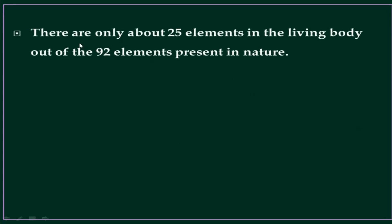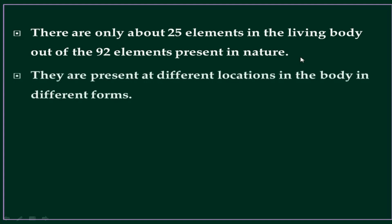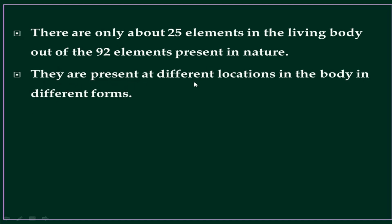Firstly, we have to learn that there are only about 25 elements in the living body. Our body contains 25 elements out of the 92 elements present in nature. These 25 elements are present at different locations in the body and in different forms.